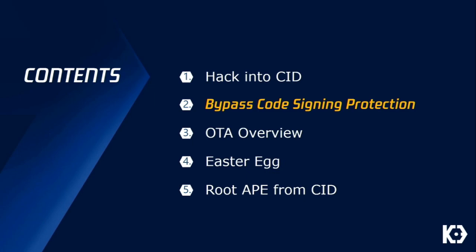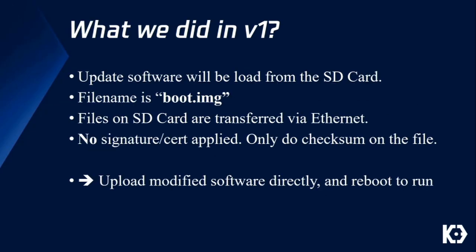Next, Yuefeng Du will tell you about how to bypass the code signing protection. Everyone knows we bypassed the code signing protection in 2017, but before that, let's go back to 2016 to see how and why it was added. We published a report that we had hacked Tesla cars, which involved an important thing in the gateway called the update software — the updater. The boot image is loaded from the SD card, and files on the SD card are transferred from the CID via Ethernet. Neither signature nor cert was applied to the update software, so we could just upload our modified software directly to the gateway and reboot.